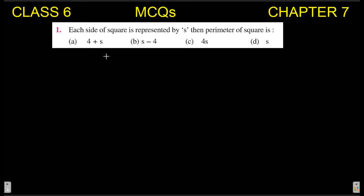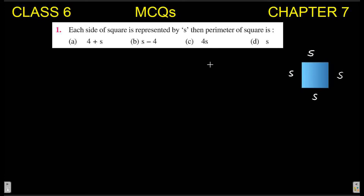A square is a shape whose four sides have equal length. The question gives each side's length as s. The perimeter of any shape is the total length of its boundary. So for a square, if I add the lengths of all four sides, I get the total boundary length, which is the perimeter.